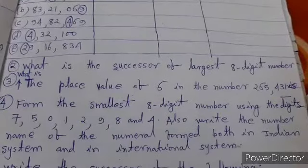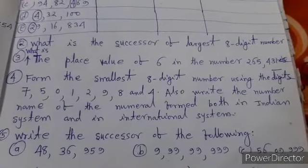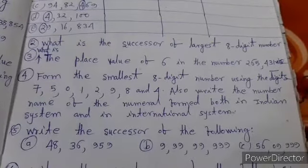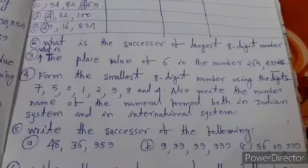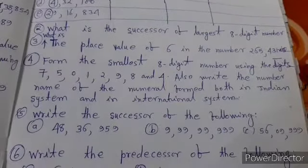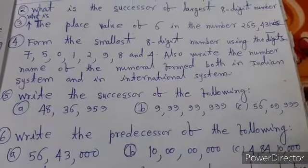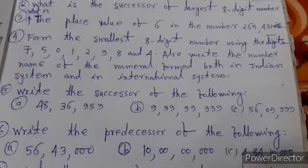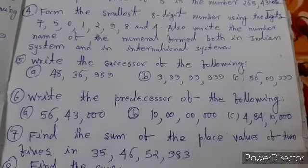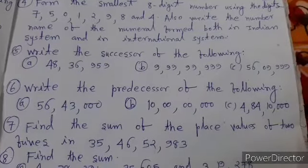Question 5: Write the successor of the following numbers: A: 48,36,959, B: 9,99,99,999, C: 56,99,999. Question 6: Write the predecessor of the following numbers: A: 56,43,000, B: 10,00,00,000, C: 4,84,10,000. Question 7: Find the sum of the place values of 5s in 35,46,52,983.